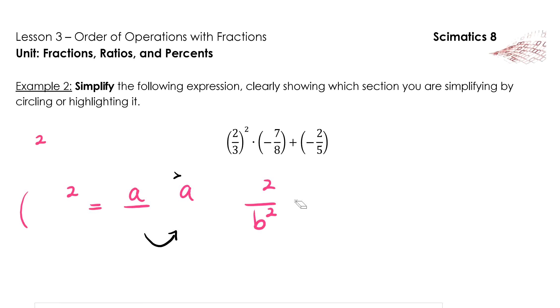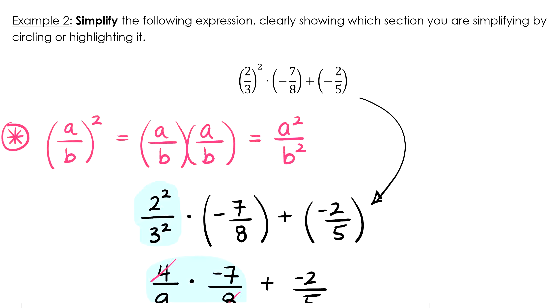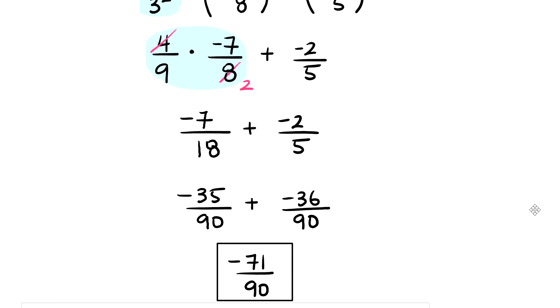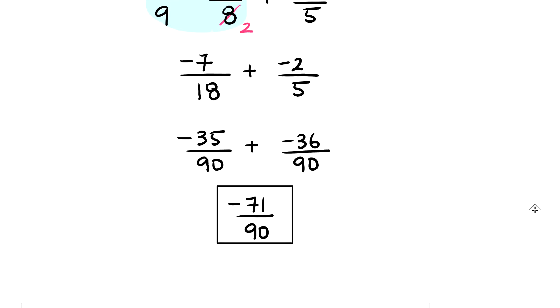Okay, that's my hint. Let's give this question a try now. So starting with (2/3)², we're able to simplify that into 4/9 and then proceed with our regular order of operations to arrive at negative 71/90.